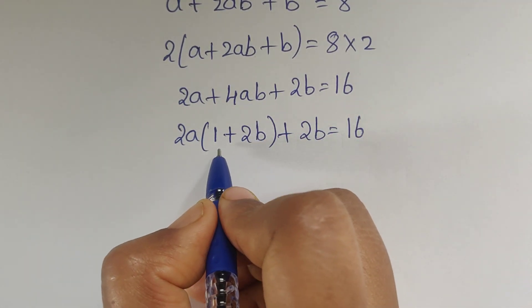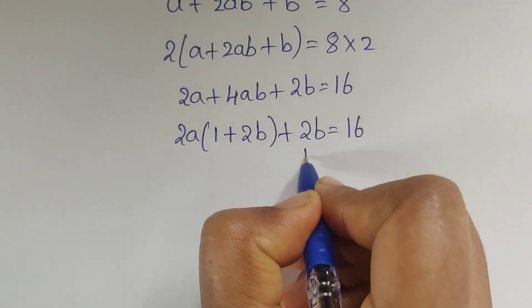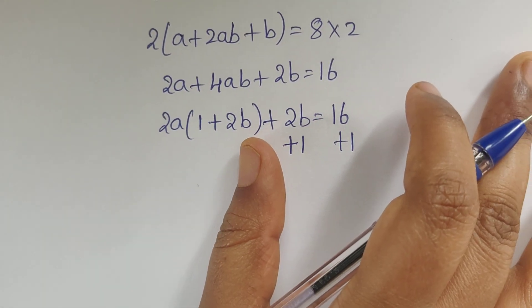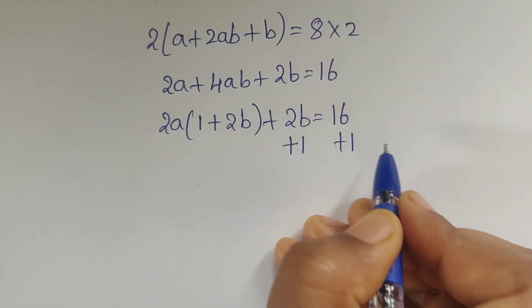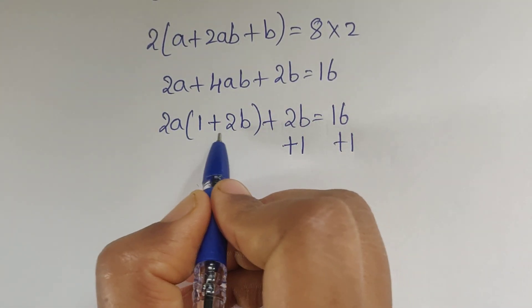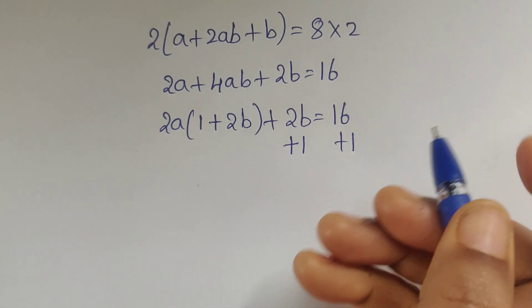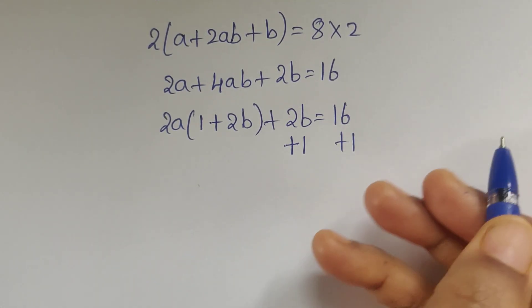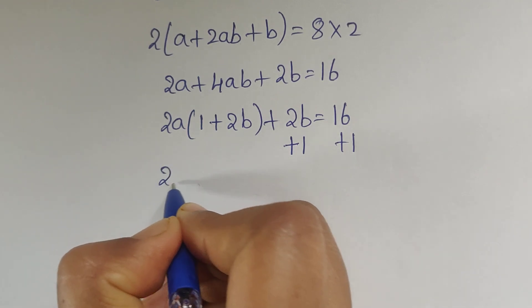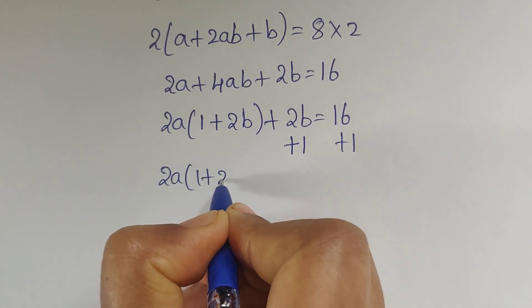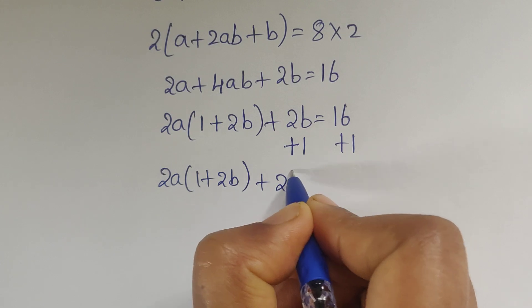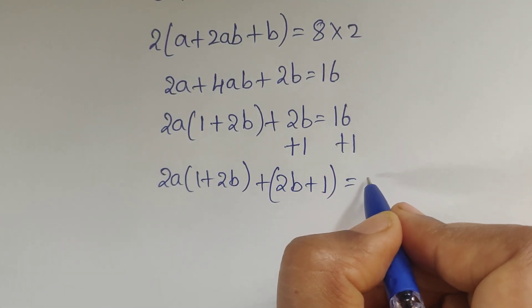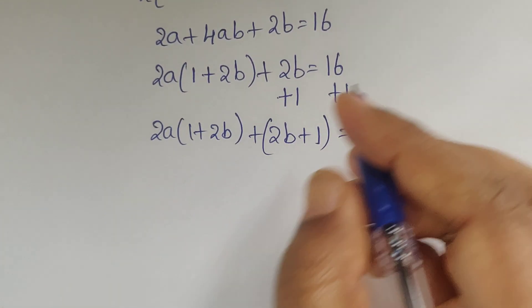So 2a times (1 plus 2b) plus 2b equals 16. To make the expression (1 plus 2b) a complete factor, we add plus 1 on both sides. So we get (2a plus 1)(2b plus 1) equals 16 plus 1, which equals 17.